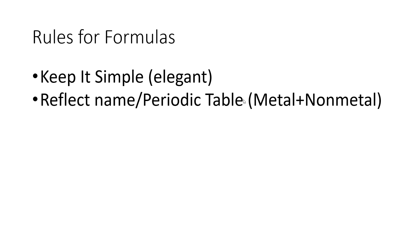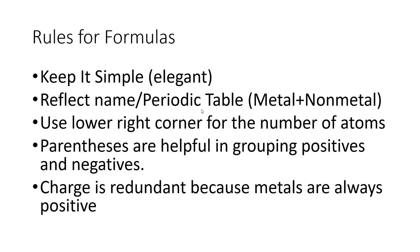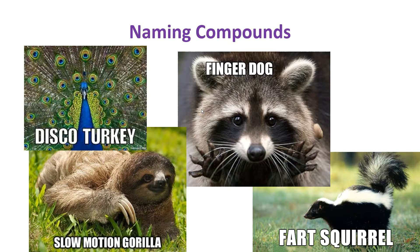And then we found formulas for these things. We came up with some rules: keep it simple or elegant, as they used to say at Ohio State. Reflect the name or the periodic table, basically. So it's always in the order of metal plus nonmetal. Sodium chloride is the metal sodium plus the nonmetal chlorine as the anion chloride. That's reflective of the periodic table as well, where the metals are on the left and the nonmetal is on the right. We use the lower right corner for the number of atoms. Parentheses are helpful in grouping positives and negatives. And charge is redundant, because metals are always positive and nonmetals are always negative.